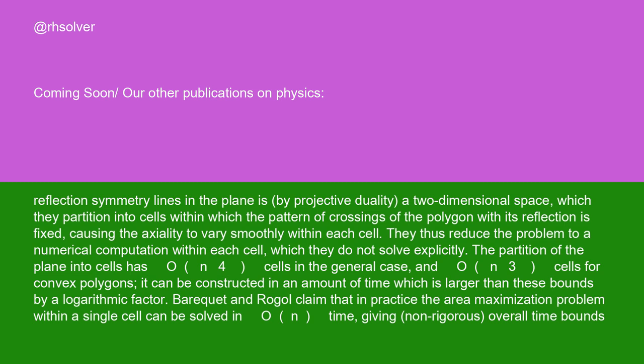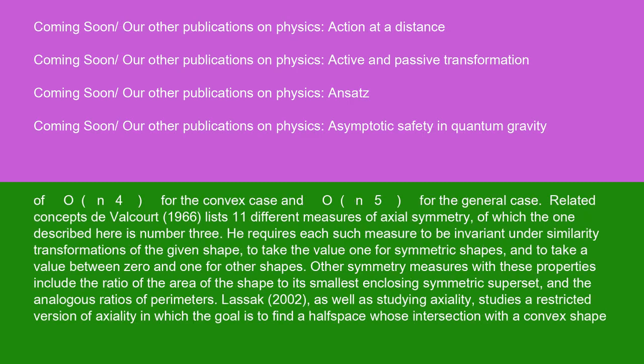The partition of the plane into cells has O(n⁴) cells in the general case, and O(n³) cells for convex polygons. It can be constructed in an amount of time which is larger than these bounds by a logarithmic factor. Barquet and Rogol claim that in practice the area maximization problem within a single cell can be solved in O(n) time, giving non-rigorous overall time bounds of O(n⁴) for the convex case and O(n⁵) for the general case.